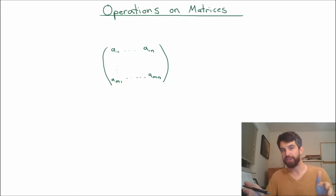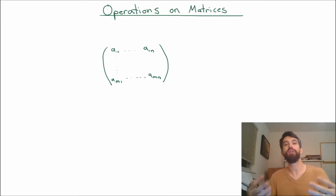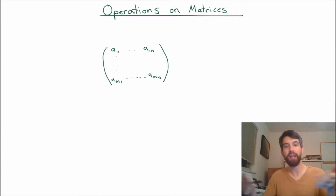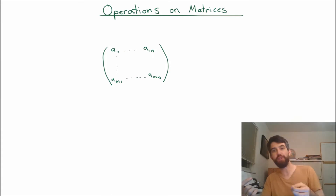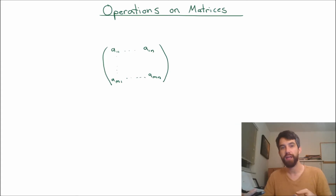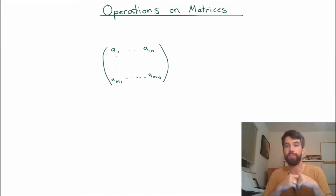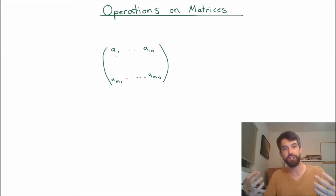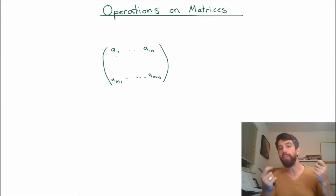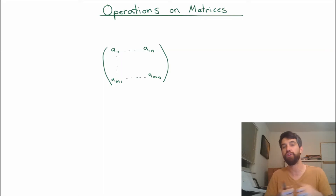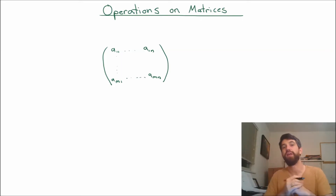When we first introduced vectors, one of the first questions we asked ourselves was: what were the natural algebraic operations of vectors? We had two. One was scalar multiplication, where you took every component of the vector and multiplied it by a scalar — geometrically, stretching its length. And we also had vector addition, adding component-wise, which geometrically corresponded to tip-to-tail addition of vectors.